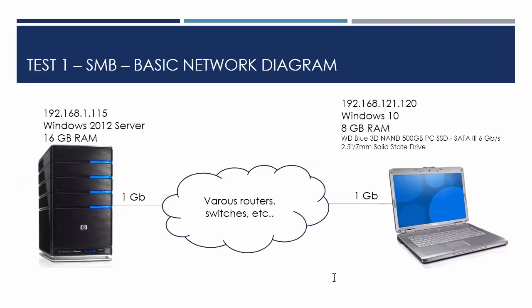This is an example of network documentation. It doesn't have to be 30 pages or anything magical - it's just whatever you know about the box. For this one, all I know is the IP, it's Windows 2012 Server, and 16 gigs of RAM. Period, end of story - that's all I'm going to put in there. If you get more information later, great, put it in. But for now, just put something in there so you can identify it later. I've also got the client machine here - Windows 10, 8 gigs of RAM - and a little bit of information about the hard drive because we're copying files. In the middle I don't know what's going on - there's just routers, switches, et cetera. What you could do is a traceroute to fill in the blanks, but for now this is good enough.